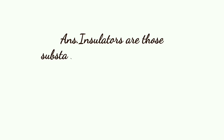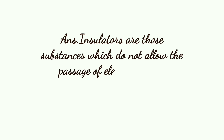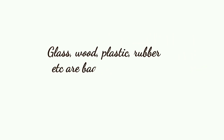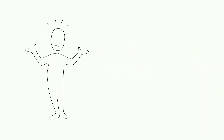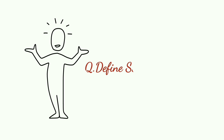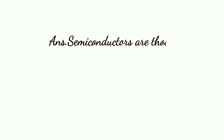Define insulators. Insulators are those substances which do not allow the passage of electric current through them. Glass, wood, plastic, rubber, etc. are bad conductors of electricity.